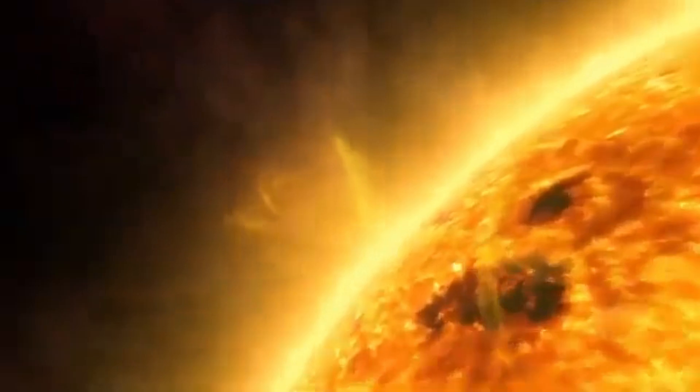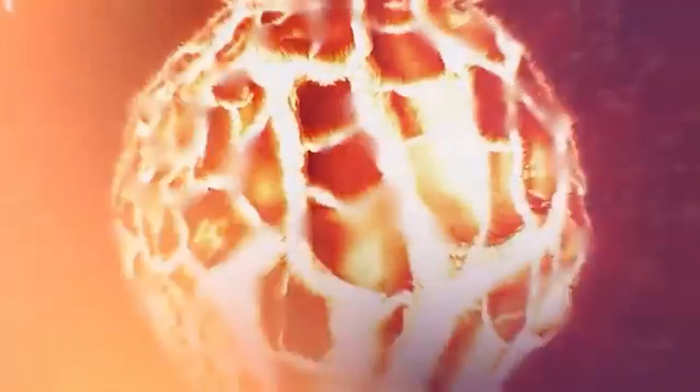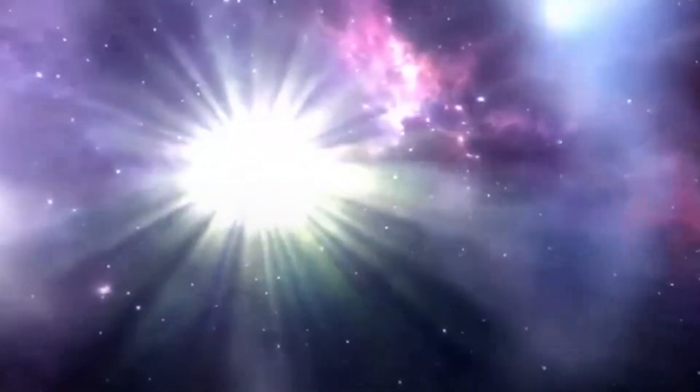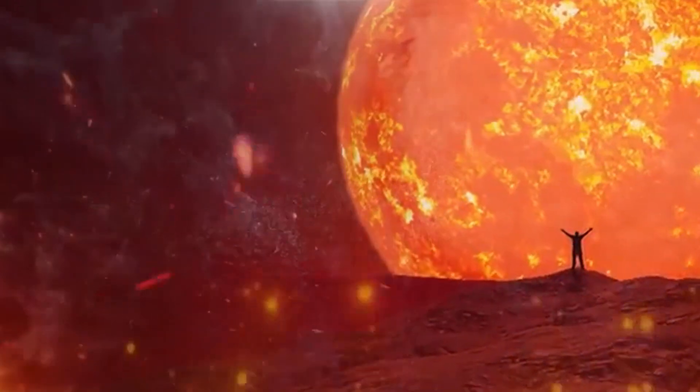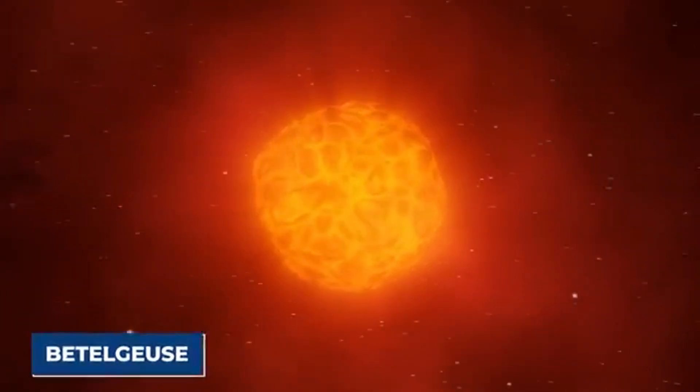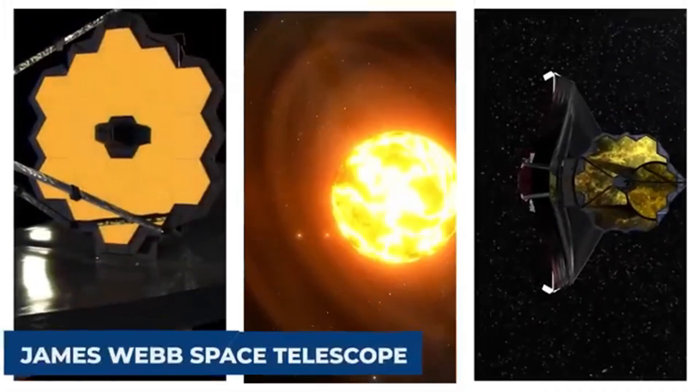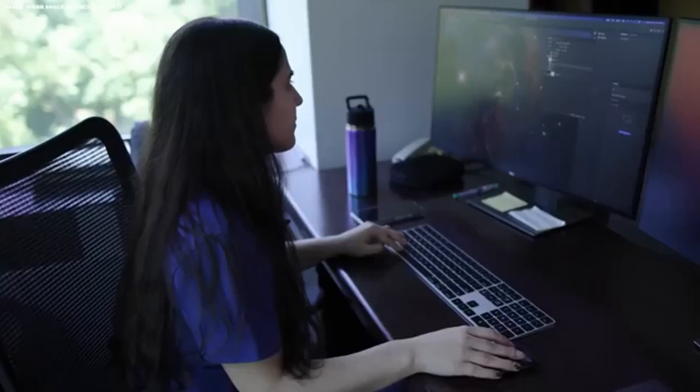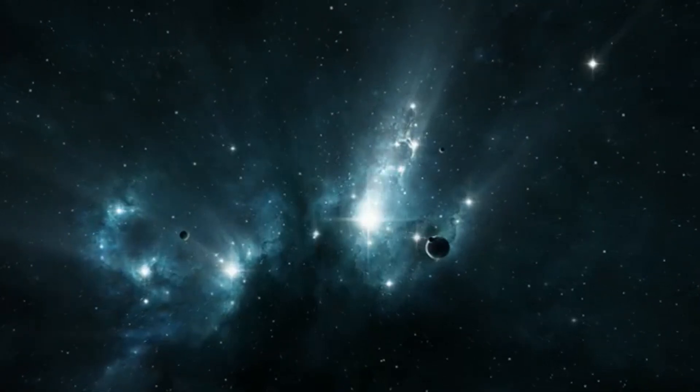In the grand tapestry of the cosmos, where stars are born, live, and die in spectacular fashion, one star has recently captured the imagination and concern of astronomers and the public alike. This star is Betelgeuse, a red supergiant of immense proportions and age, situated conspicuously in the constellation Orion. Its distinctive reddish hue and variable brightness have long been a source of intrigue, but recent developments have intensified interest in the celestial giant.